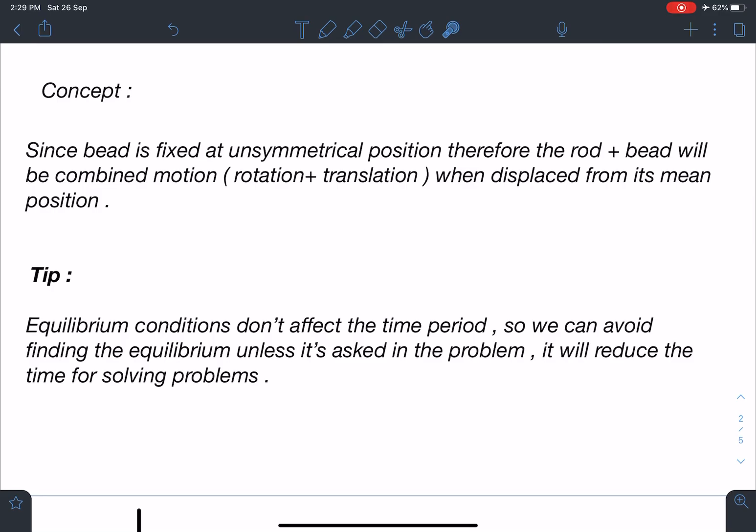Since the bead is fixed at an unsymmetrical position, the rod plus bead will be in combined motion. That means both rotation as well as translation will take place when displaced from its mean position. This is the first term and trust me, majority of the students make mistakes in this.